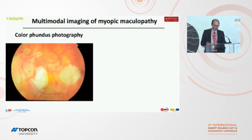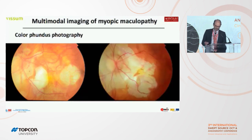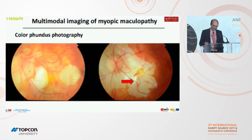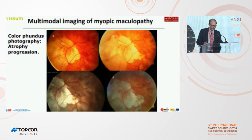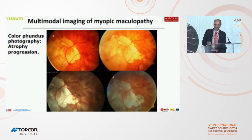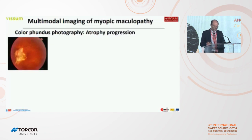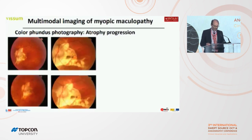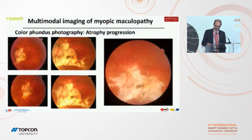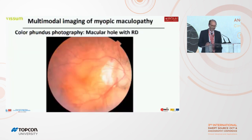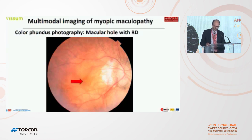Currently, color fundus photography is the normal modality to study myopic maculopathy, as you can see in these two pictures with macular atrophy and pseudopathy in these cases. With color fundus photography, we can study very clearly the atrophy progression, as you can see in this patient or in this very old patient with progression of the atrophy.